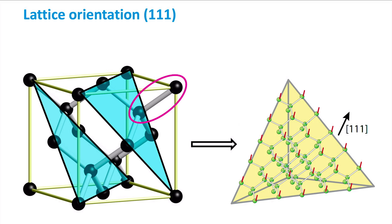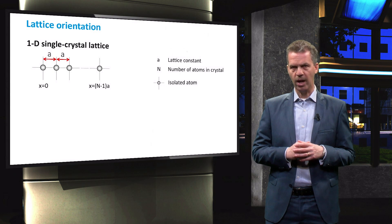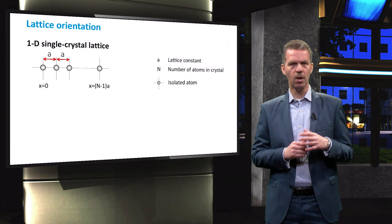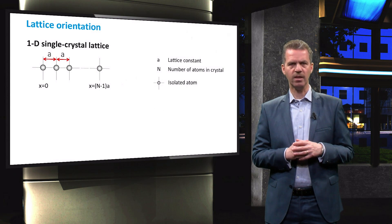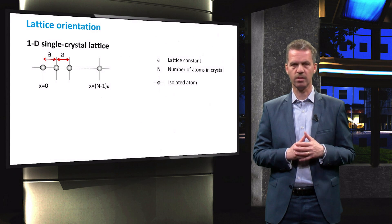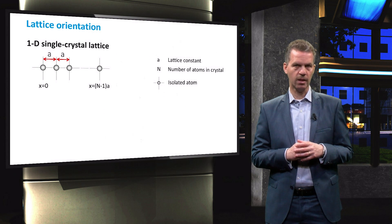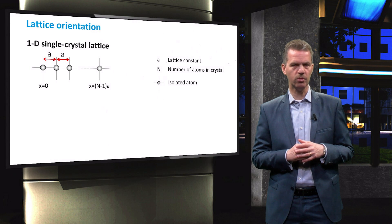Later in the course we will discuss more differences between these two lattice orientations, but for now we briefly discuss the effect of the lattice orientation on the energy dispersion diagram for silicon. In order to simplify our discussion and to get some intuitive idea about the effect of the lattice on the dispersion diagram, we take a look at the one-dimensional lattice of equally spaced atoms a distance a apart. On atomic scale, the behavior of electrons is described by quantum mechanics, in particular as a solution to the Schrödinger equation.